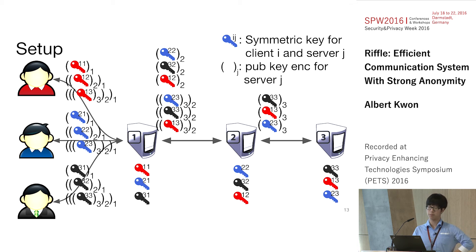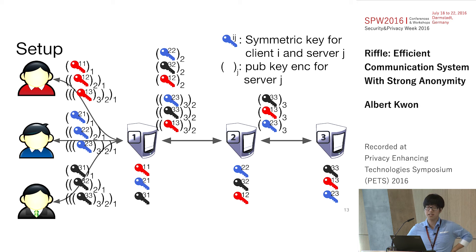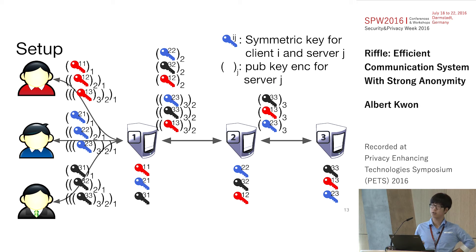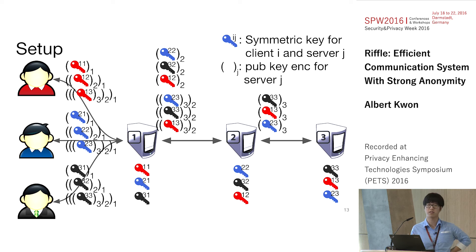At the end of setup, all servers have a permuted version of the keys. Because these keys were verifiably shuffled, servers have a guarantee that the keys originated from the clients. The zero-knowledge property of the verifiable shuffle ensures that no server can figure out which client sent which keys, at least for honest clients.